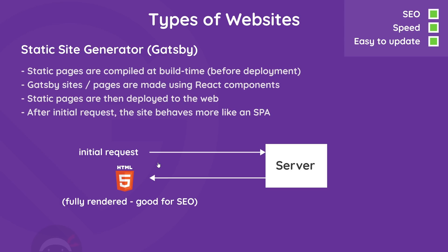From this point on, once we have the page in the browser, the JavaScript bundle generated by Gatsby kicks in and the website behaves much like a single page application — routing is handled in the browser, making the site really quick with no extra requests for other pages sent to the server. Unlike a traditional SPA though, our site has better SEO because our initial request returns a content-rich pre-rendered HTML file, not a blank page. This process brings together all the benefits: good SEO, good speed, and easy to update with React — with pretty small trade-offs.